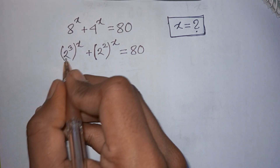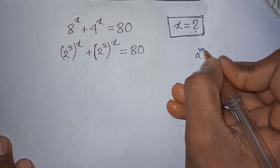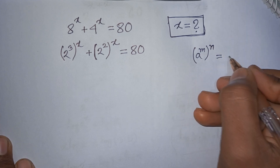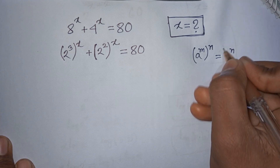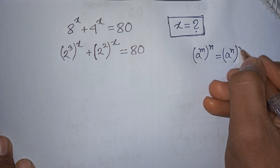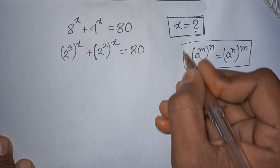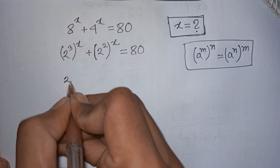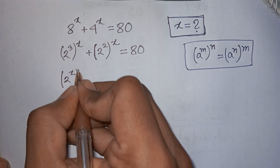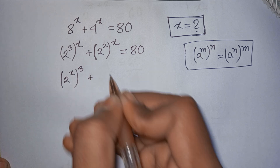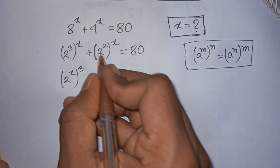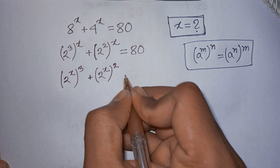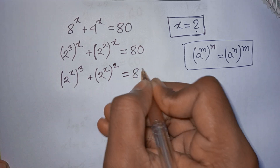In the next step, we apply the exponential rule that a power m bracket power n is equal to a power n bracket power m. So, 2 power 3 bracket power x is the same as 2 power x bracket power 3, plus 2 power 2 bracket power x is the same as 2 power x bracket power 2, is equal to 80.